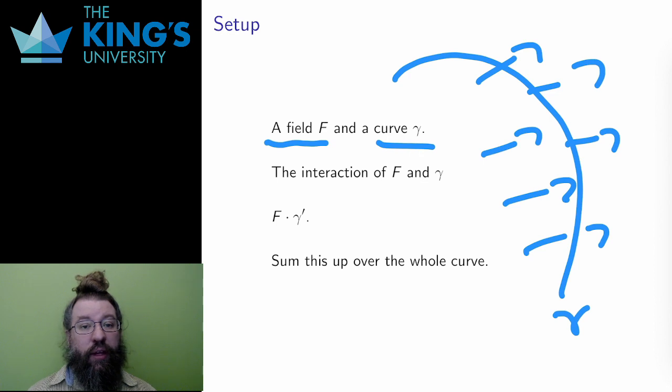In the case of the leaf and the wind, the field and the path work together. In the case of the person moving upwind, the field and the path are opposed. I'd like to measure this interaction.